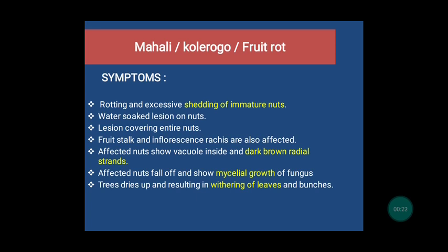First one: Mahali disease. It is also known as Koleroga or Fruta disease. The causal organism of the disease is Phytophthora arachidis. Its symptoms start with rotting and excessive shedding of the immature nuts. Then a water-soaked lesion occurs on the nuts. The lesions cover the entire nuts, and the fruit stalk and the inflorescence stretches are also affected. The affected nuts show vacuoles inside and dark brown radial strands. Then the affected nuts fall off and show mycelial growth of fungus, and at last the tree dries up, resulting in the withering of the leaves and bunches.